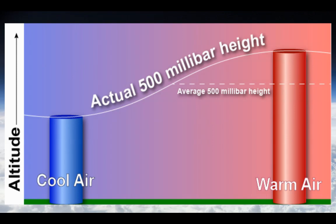If we're forecasting warmer than average temperatures, we base that on the 500 millibar height being higher than 5,600 meters on the prediction map.